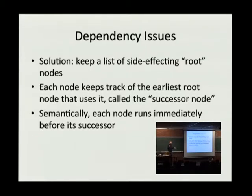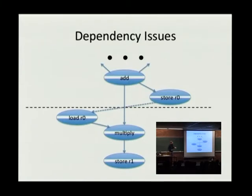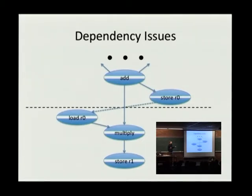The solution is we keep a list of these so-called root nodes, which are side-effecting and don't have any children — things like write registers, write to varyings, and basically any output. We keep those in order. For each non-root node — things like add two things, load a varying, or load a uniform — we keep track of which is the earliest root node that uses that value, and we call that its successor node. We order things with respect to the root nodes so that every non-root node knows where in the instruction stream it is. As far as the compiler is concerned, each node runs immediately before its successor node. In our example, there is basically a line drawn between the store r0 node, and then everything after it is run immediately before the store r1 node. When we go to run the scheduler, we insert a fake dependency between the store r0 node and the load r0 node so that it's scheduled in the correct order.